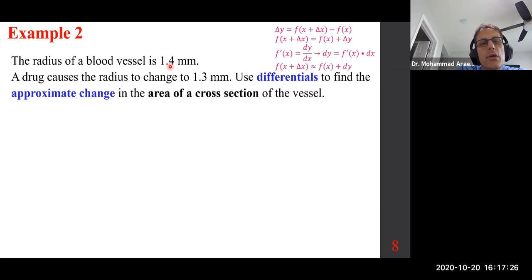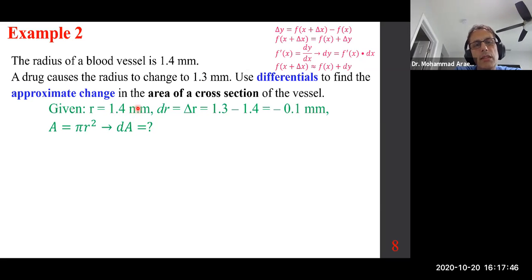Then r is 1.4, and we change it to 1.3. So their difference, that means 1.3 minus 1.4, is delta r or dr. And we are interested in finding dA. So take a look at what's given. r is 1.4 millimeters. dr or delta r is negative 0.1. I want to explain this one. I want to make sure you understand what's happening. Why is this negative? Because it goes from the original size to a smaller one. So always the new one minus the old one. That would be your delta or dr.